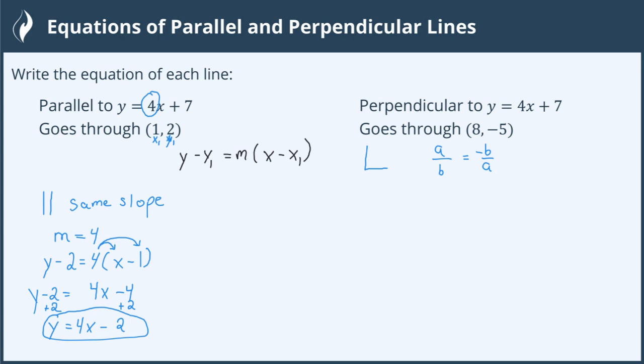So if it's a positive, it becomes a negative. A negative becomes a positive. You may be looking at this slope, 4, and think, well, that's not a fraction. It is a fraction if we put it over 1.